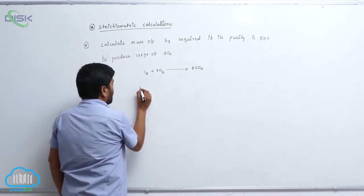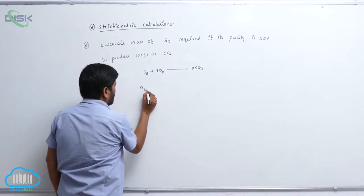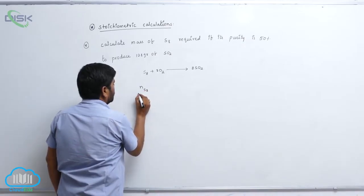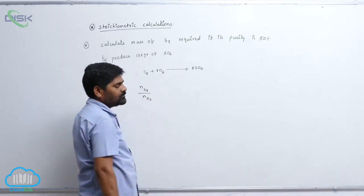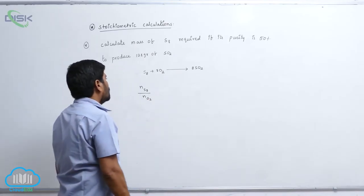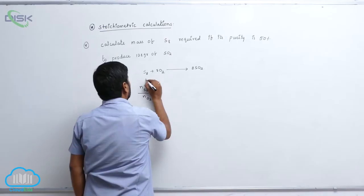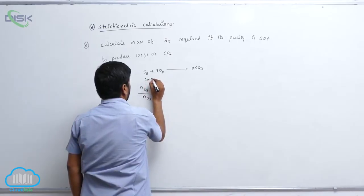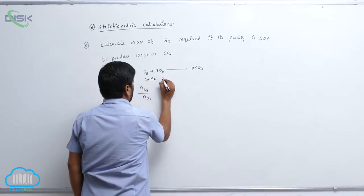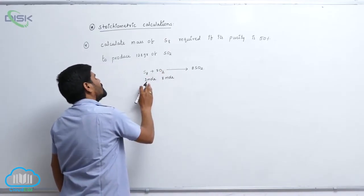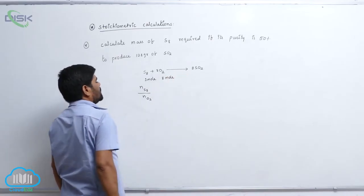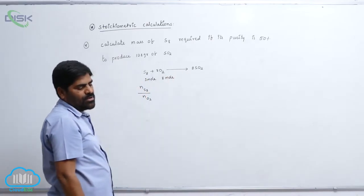Now number of moles of S8 by number of moles of O2. This is 1 mole. It is also 8 moles. For the formation of sulfur dioxide, 1 mole of sulfur, 8 moles of this one is involved based on this.